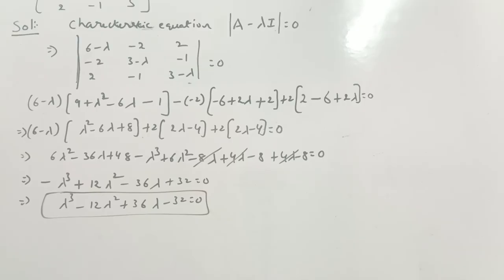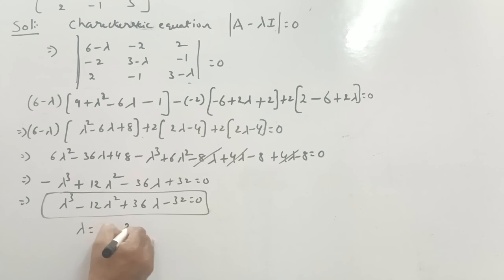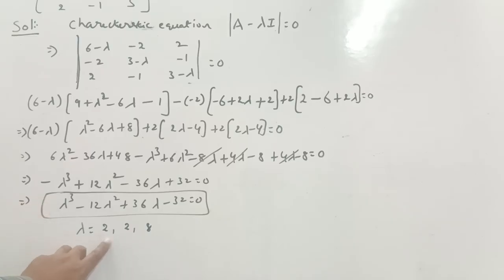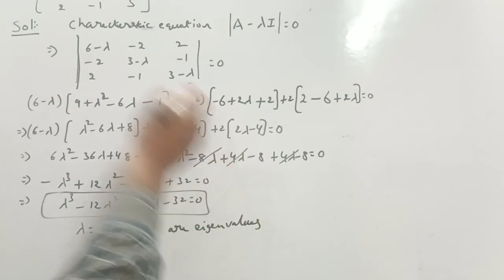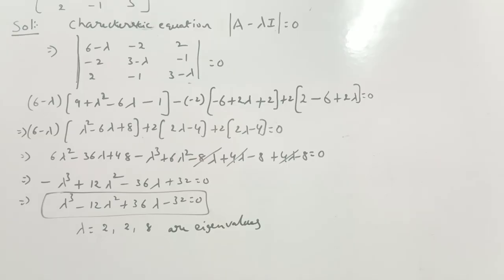Now we have to find the lambda values. Using a calculator, the lambda values are 2, 2, and 8. Therefore, the eigenvalues are 2, 2, and 8. We got lambda equals 2 as a repeated root and 8 as a single root.